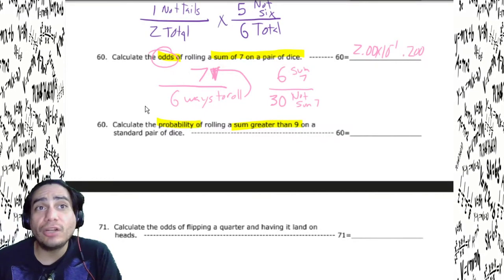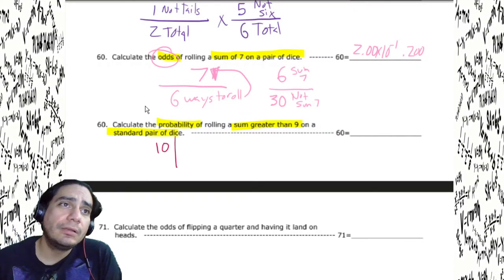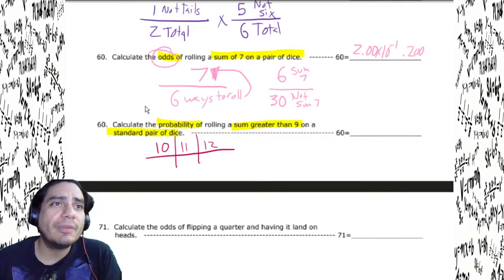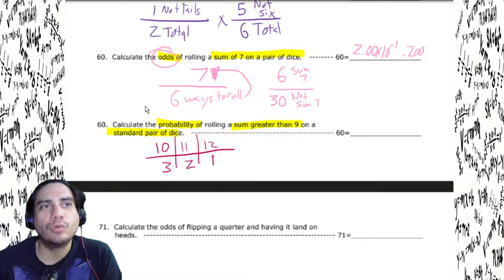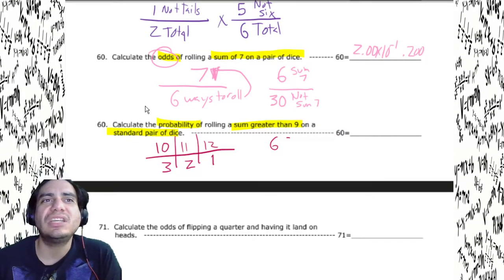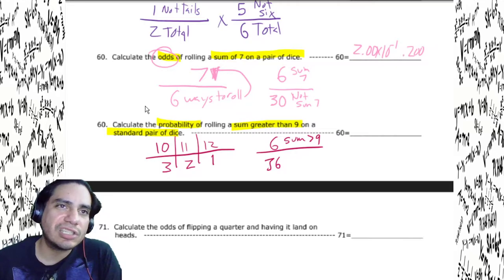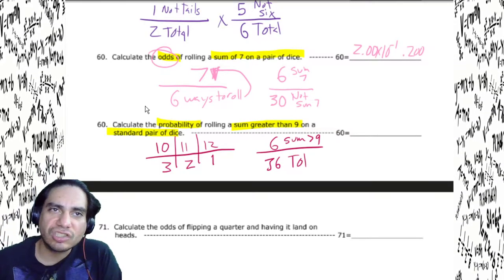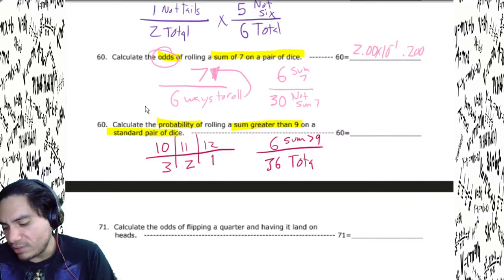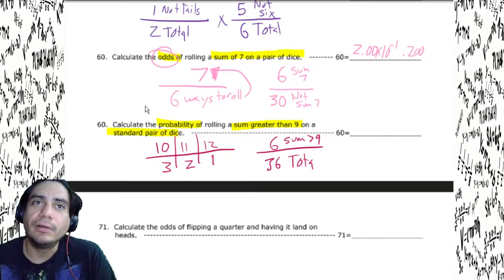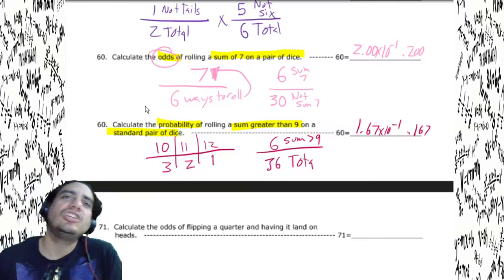Calculate the probability of rolling a sum greater than nine on a standard pair of dice. Greater than nine means 10, 11, or 12. Ways to roll 12: one; 11: two; 10: three. Total of six ways out of 36. Six divided by 36 gives 1.67 times 10 to the negative first, or 0.167.